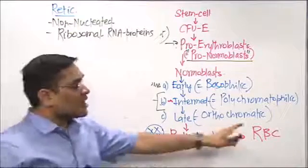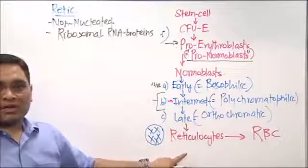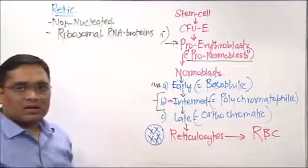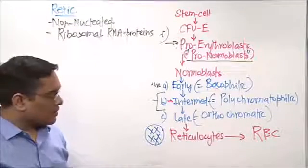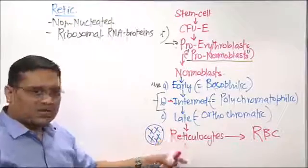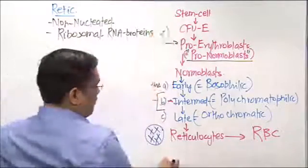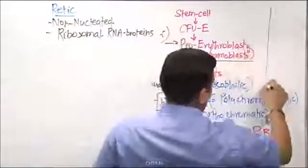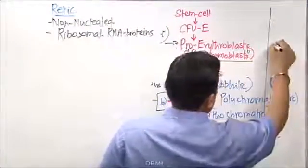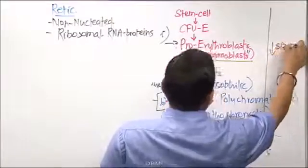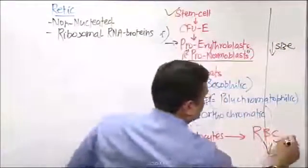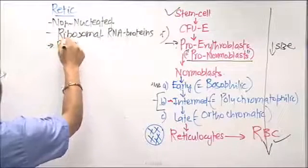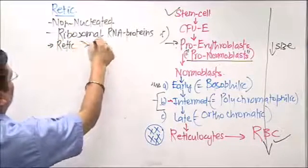Another question: is a reticulocyte larger or smaller than an RBC? Reticulocytes are larger than RBCs. In the order of decreasing size, the largest cell is the stem cell and the smallest is the RBC, so reticulocytes are larger than RBCs.